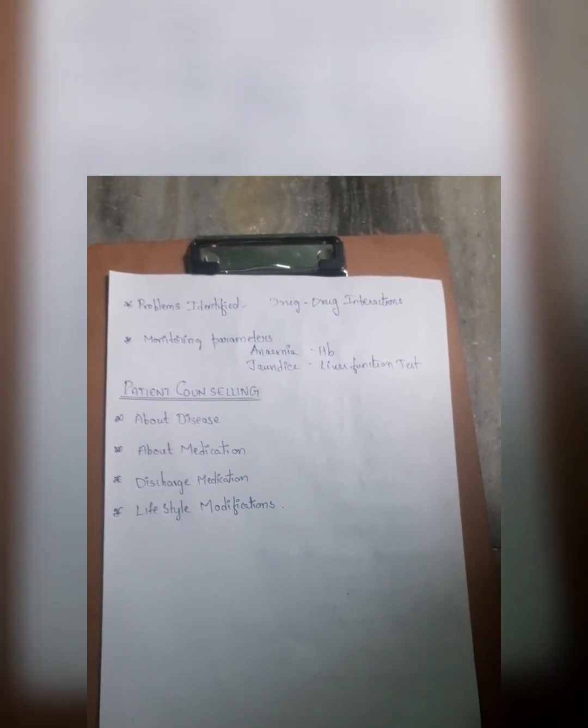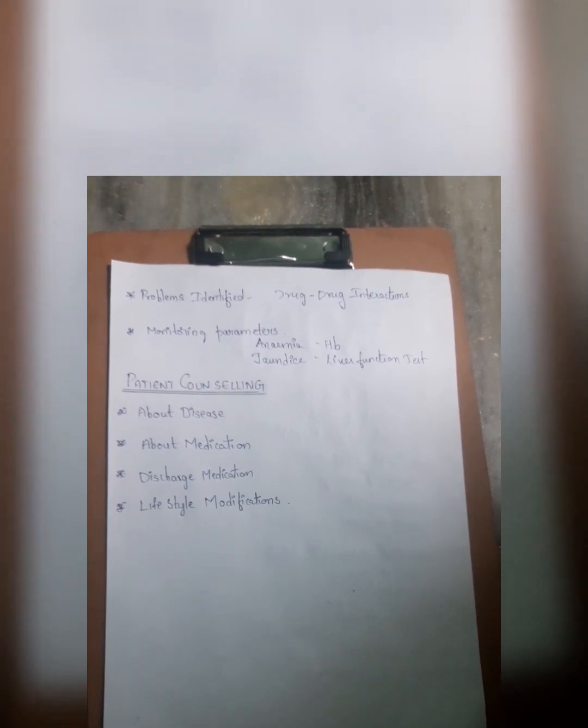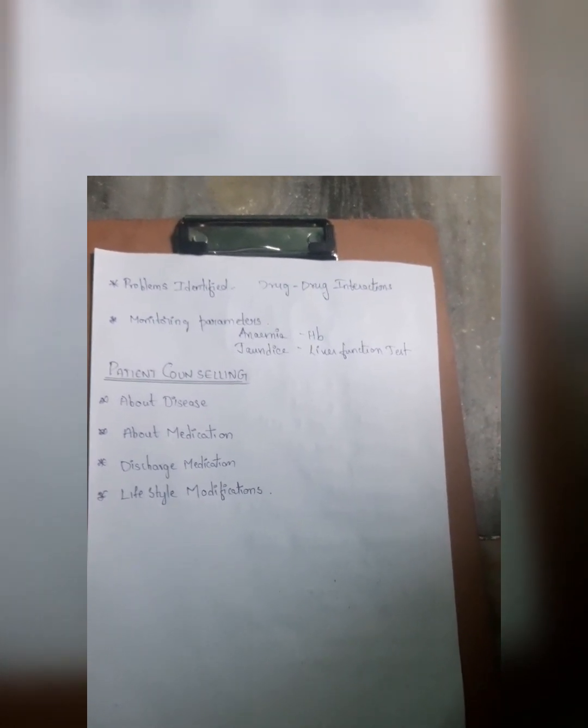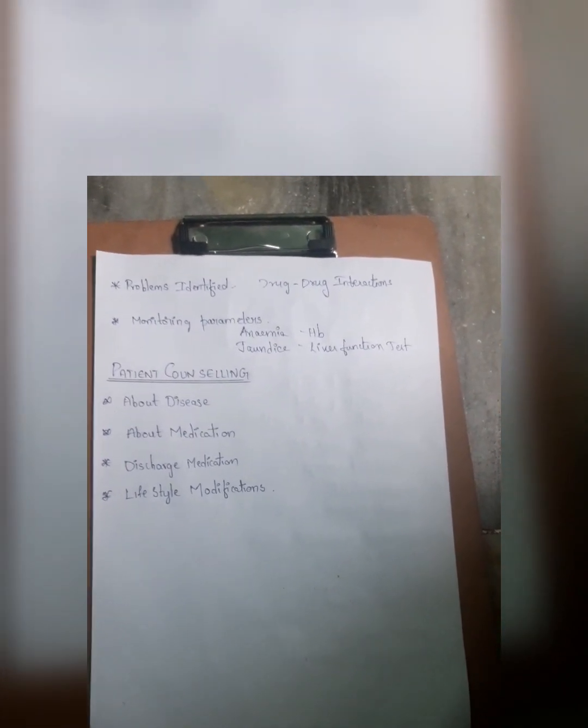Lifestyle modification covers what lifestyle changes the patient should make during a particular disease condition. Generally, lifestyle modification includes eating a healthy diet — for a diabetic patient, a diet rich in fiber and low in sugar; for a hypertensive patient, a low-salt diet. Other recommendations include exercising regularly, walking at least 30 minutes, having adequate sleep, avoiding stress, avoiding smoking, and avoiding drinking alcohol. All this comes under lifestyle modifications.